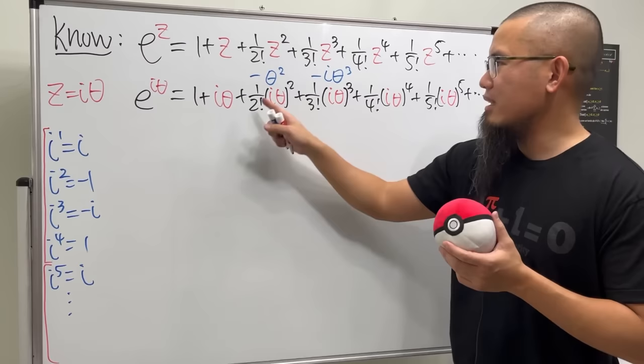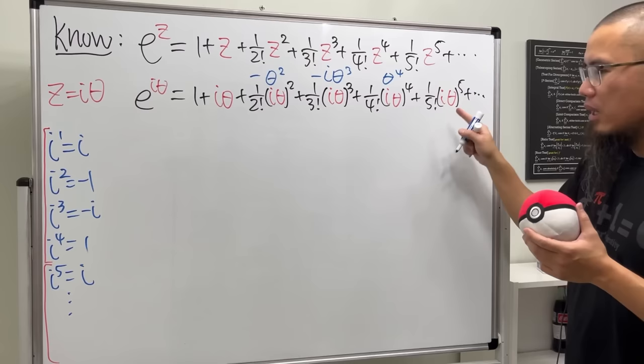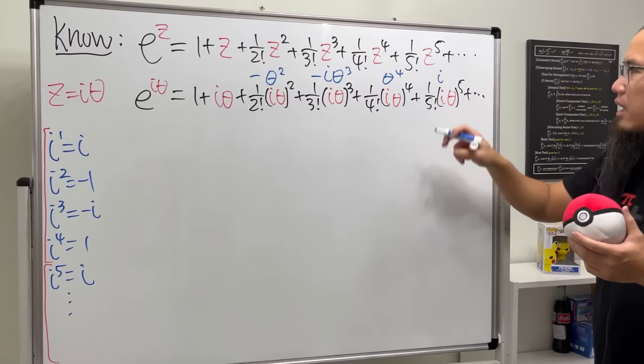Okay. And then the next one, we have 1. So this is just theta to the fourth power. And the next one is i to the fifth power, which is just positive i. And then we have theta to the fifth power. And the next one is actually going to be a negative.